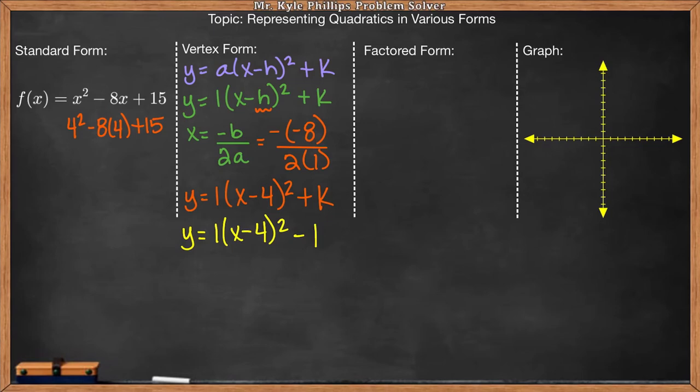So that's how it would look if I went from standard form to vertex form. So I have x squared minus 8x plus 15. So here, they want you to factor this.